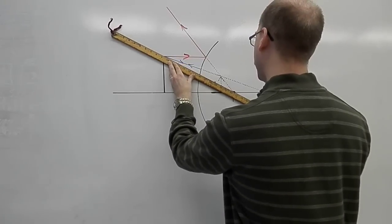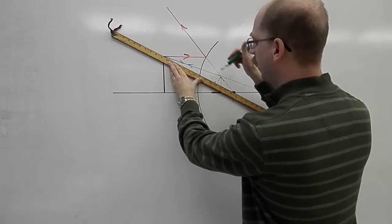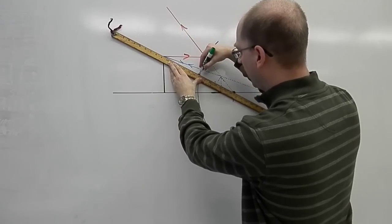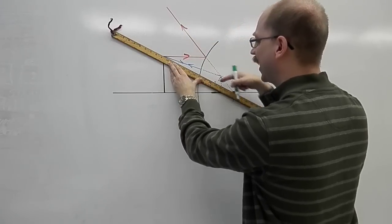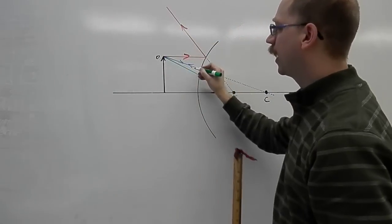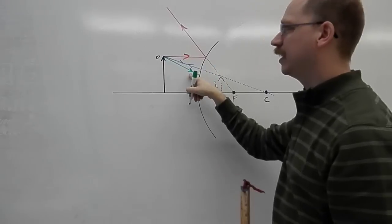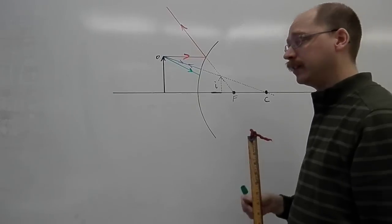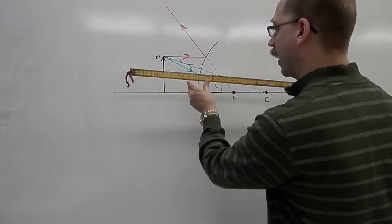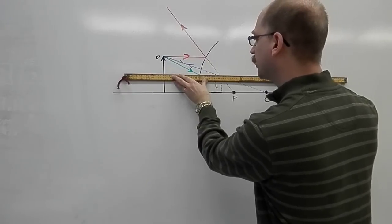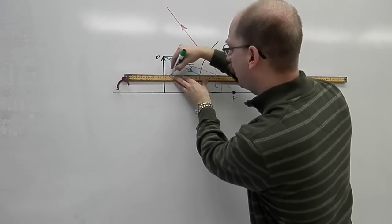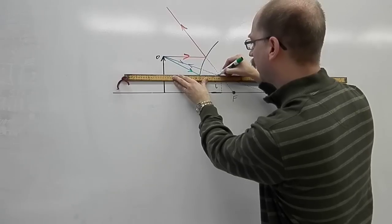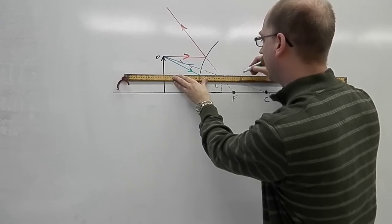I would go from the object aiming down here to the focus. Now this is the problem. A lot of people take this and extend it behind. But I can't. This is an incident ray. It doesn't belong going behind. It's only a reflected ray that does. The reflected ray goes bouncing off parallel to the principal axis. That's the one that I can extend behind the mirror like that.